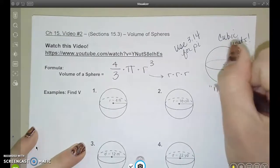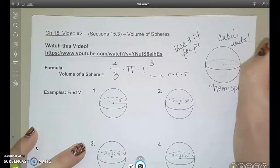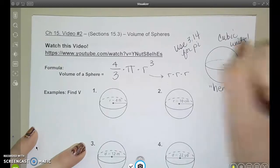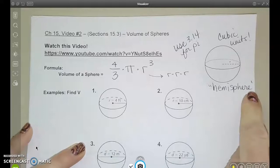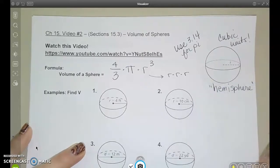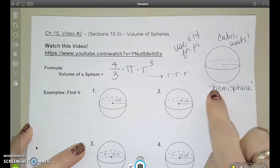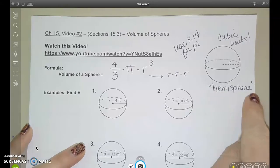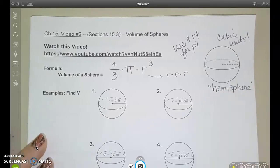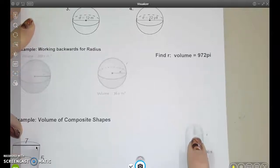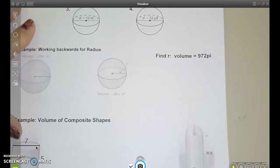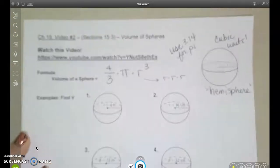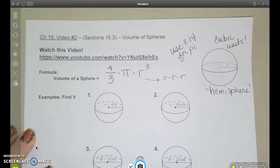I also want to write down this word, hemisphere. If you cut a sphere in half, so exactly half of a sphere, you get a hemisphere. So you're going to see some problems, like for example, down here in our composite shape where we have a hemisphere as part of a composite shape. Those might pop up as well. It's just going to be exactly half of the volume of the whole sphere.